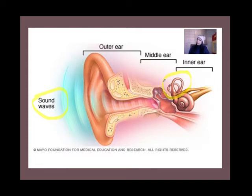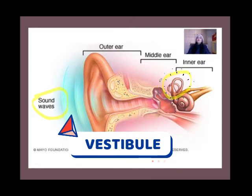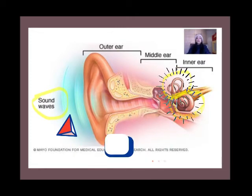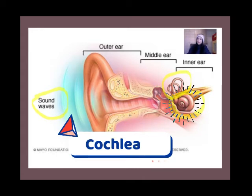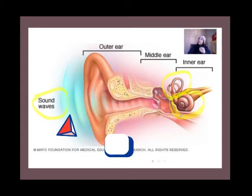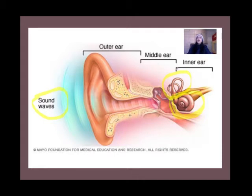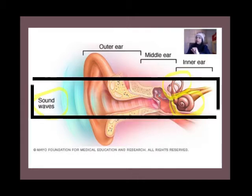Our inner ear is made up of our vestibule together with our snail-like looking structure called the cochlea. To understand the sense of balance and equilibrium, we have to look at our vestibule.